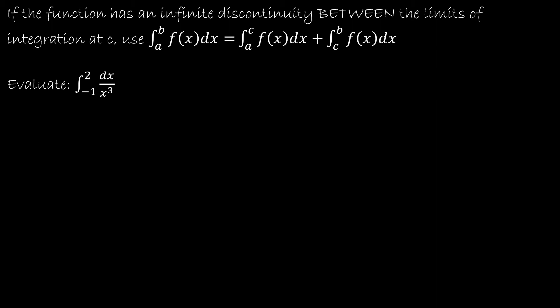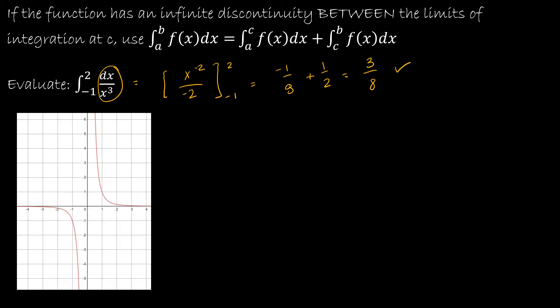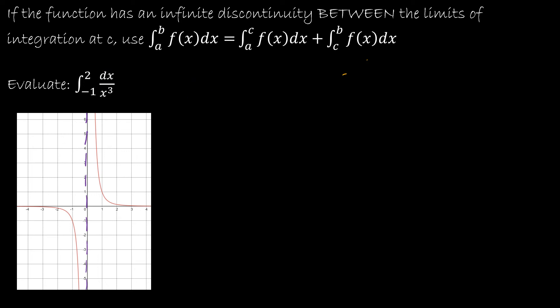For our last example, we'll take a look at what happens when you have an infinite discontinuity between the limits of integration. Quite often, students see a question like this and say it's pretty easy — integrate x to the negative third dx to get x to the negative 2 divided by negative 2 from negative 1 to 2, which gives negative one-eighth plus one-half, equaling three-eighths. The problem is there's a giant infinite discontinuity right in the middle — an asymptote at x equals 0. That's why we have this rule: to split the integral into two parts and look at each part separately to determine if it converges or diverges.